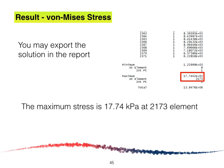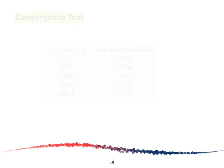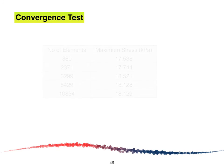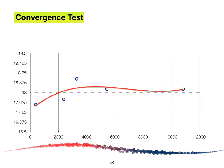The next step is to run a convergence test. In this test, five different numbers of elements corresponding to different element sizes are run and plotted on a graph. The five element counts are plotted against maximum stress using a polynomial curve, and it is found that the minimum number of elements we can use is approximately between 4,500 and 5,500.